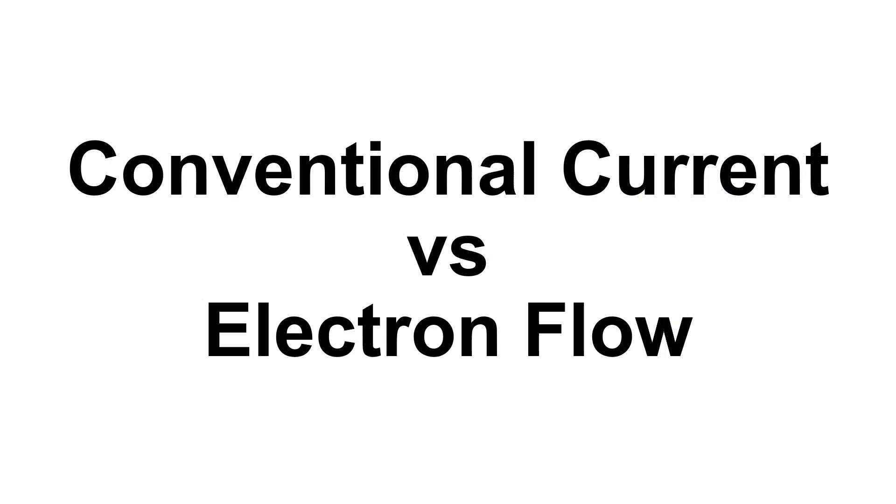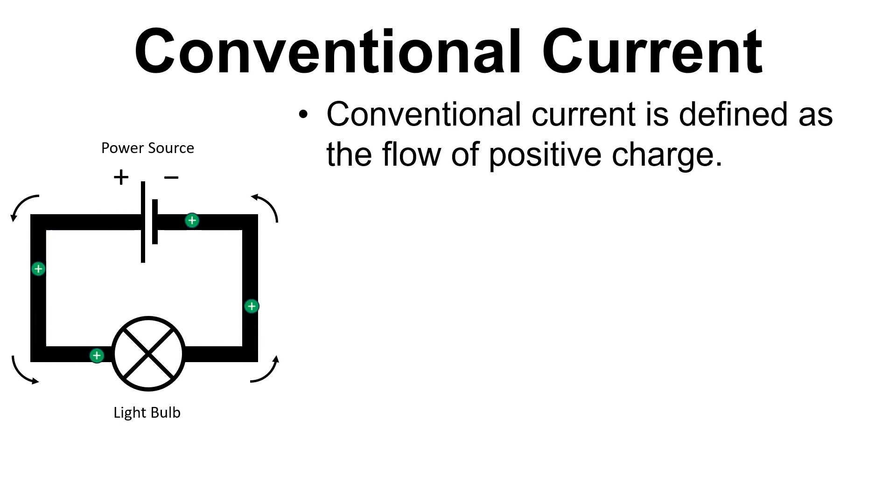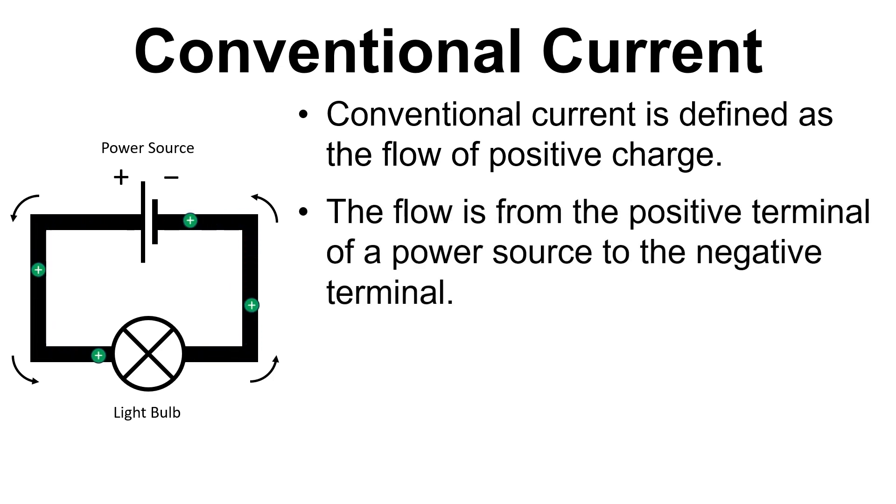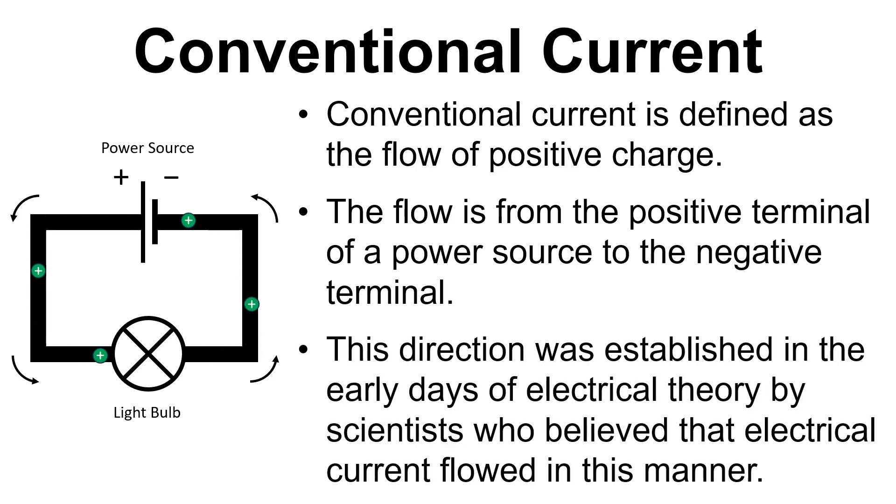Now we'll take a look at the difference between conventional current and electron flow. So conventional current is defined as the flow of positive charge, and the flow is from the positive terminal of a power source to the negative terminal. This direction was established in the early days of electrical theory by scientists who believed that electrical current flowed in this manner.